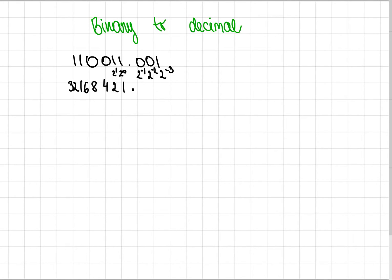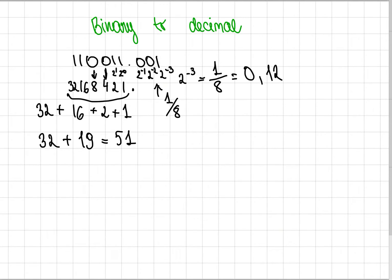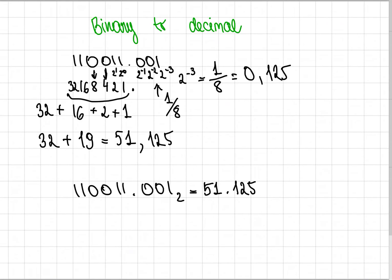So let's check which numbers are under 1. So that's 1 plus 2. Here's 0, so we don't need 8, we need 16 and we need 32. So the sum is 32 plus 19, and that is 51. And here we have 1 eighth, because two to the power of minus 3 equals 1 eighth basically. So 1 eighth equals 0.125. So 1 1 0 0 1 1 . 0 0 1 in binary equals 51.125 in decimal.